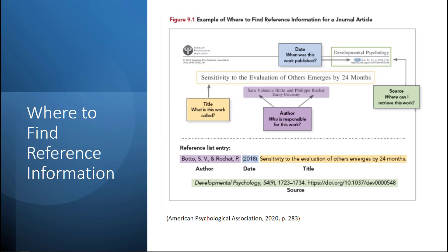Where do we find reference information when we have an article? This chart gives us an example of where we can find different types of reference information for a journal article. Notice at the top in blue we have the date when this work was published. On the left you can see the title — what is the work called — and this is the title of the article. In the middle in purple we have the author, who is responsible for this work. On the right in green we have the source — where can we retrieve this work. Below is the reference list entry color coded to show the order these different pieces belong in. Notice at the bottom of the PowerPoint screen I also have an in-text citation with the author being the American Psychological Association, the year of publication for the manual is 2020, and this diagram appears on page 283.